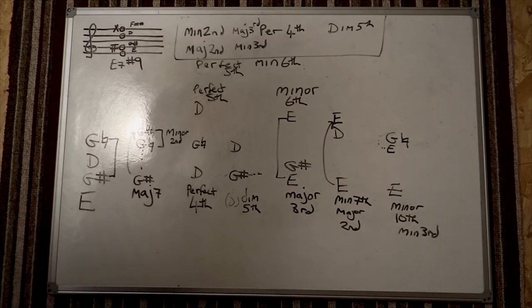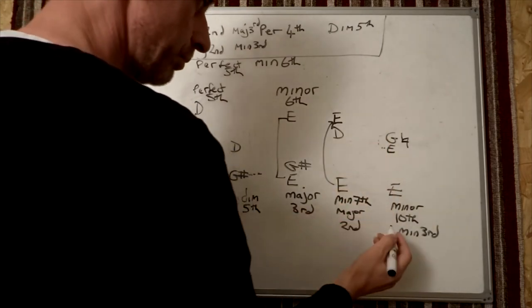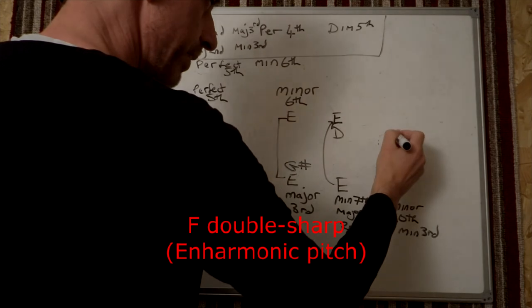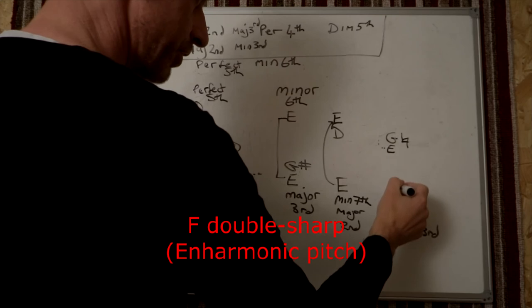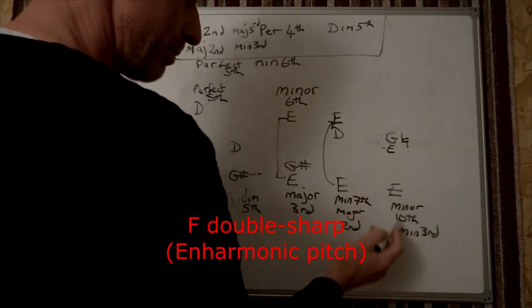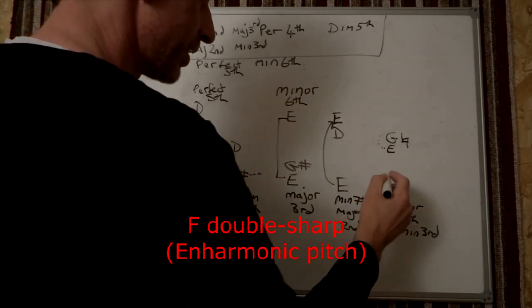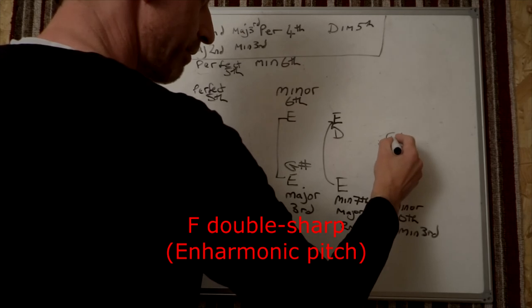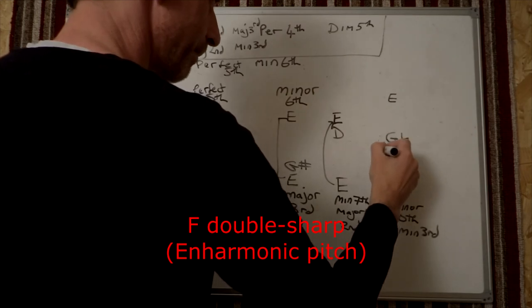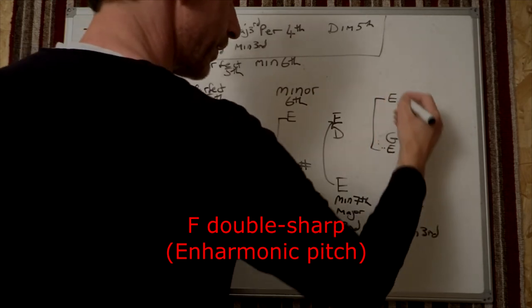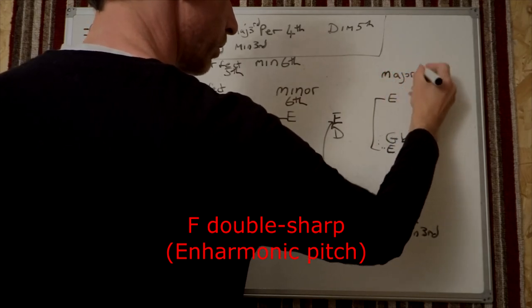Now we're looking for a major sixth. Our major sixth is derived from here, because if you've got E to E, which is the octave, and E to G-natural, which is our minor tenth and minor third, then to generate a major sixth, you need to go from the G-natural all the way up to the E here. And there is your major sixth.